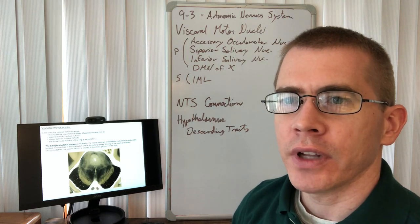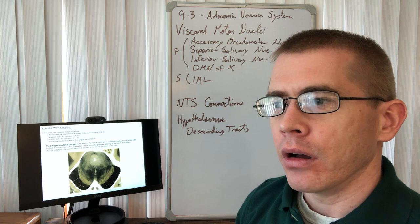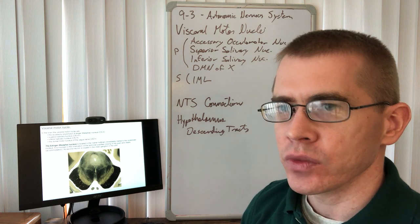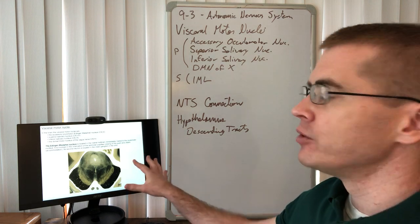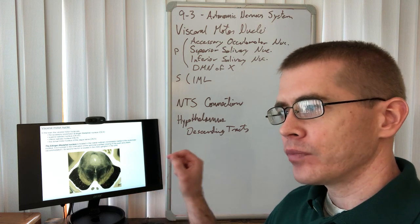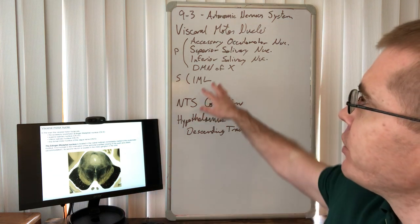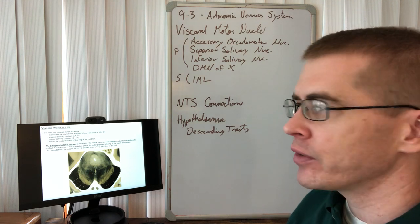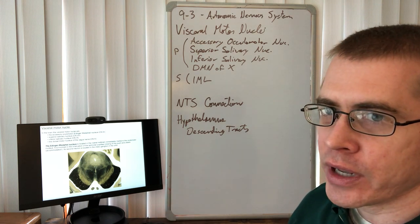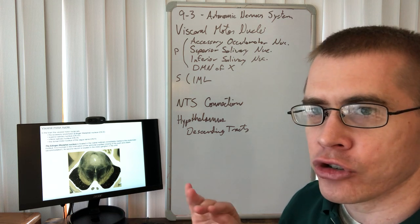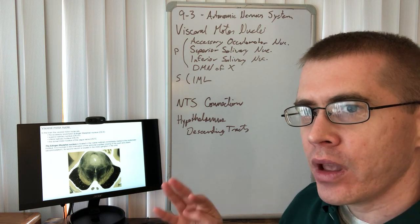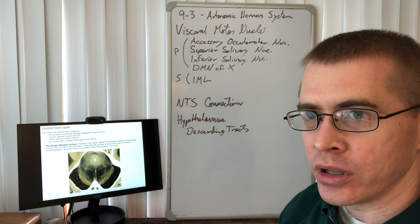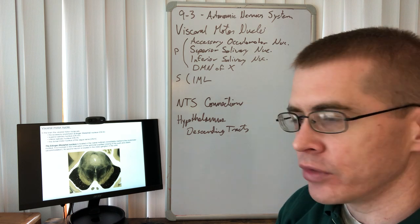All right everyone, welcome to part two of 9-3, talking about the nuclei that control the functionality of the autonomic nervous system. We've already been introduced to numerous of these nuclei when talking about the cranial nerves. You've got the accessory oculomotor, as well as a superior salivary, inferior salivary, and the dorsal motor nucleus of the vagus nerve. These are the parasympathetic nuclei that control parasympathetic functions in the head, neck, thorax, and most of the abdomen to the splenic flexure of the colon before the descending colon.